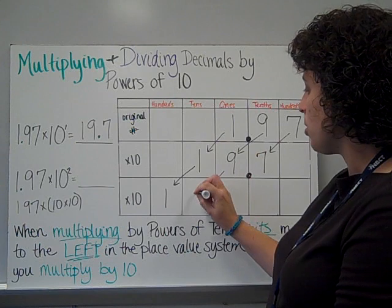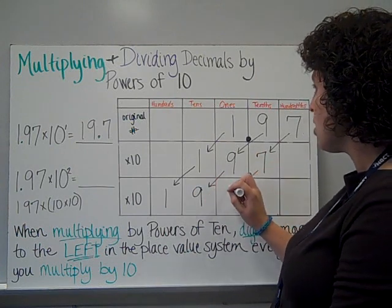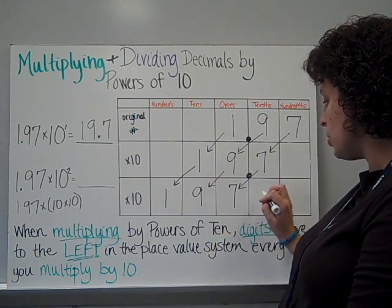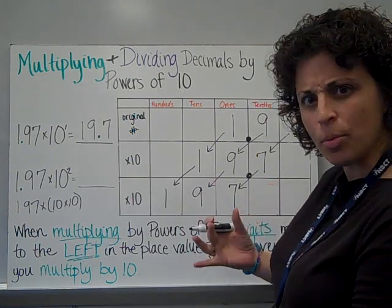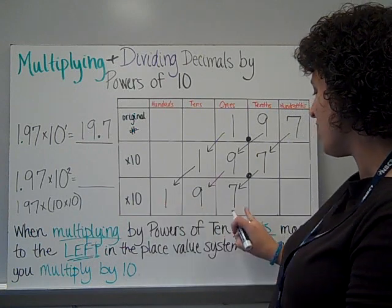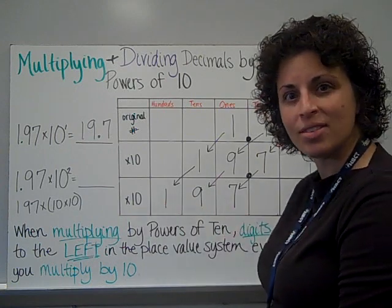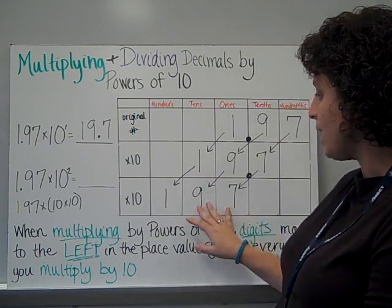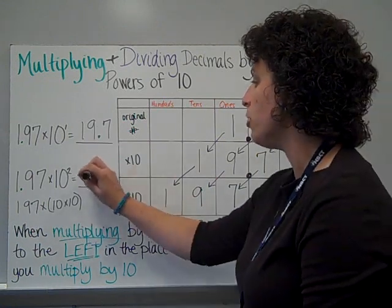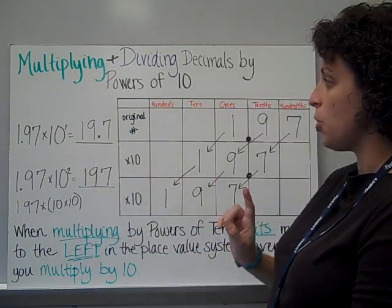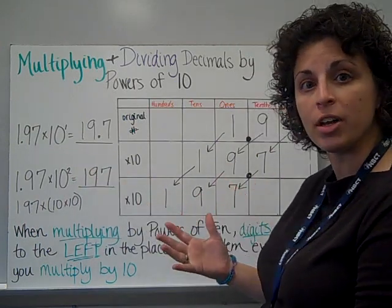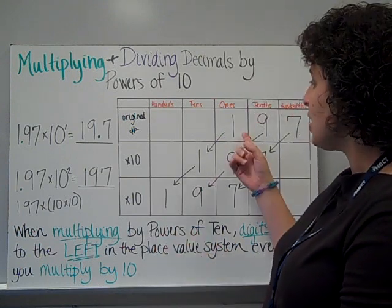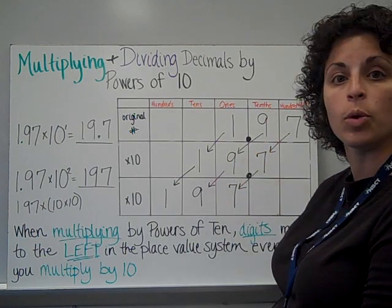The 9 would come over to the tens place, and the 7 comes into the ones place. I could put my decimal and a 0 here, but then my number would read 197 and 0 tenths. I don't need that 0 tenths, so I don't need the decimal either. My answer is just 197. So the pattern in our place value system of digits moving to the left every time we multiply by a 10 continues even when we have a decimal.